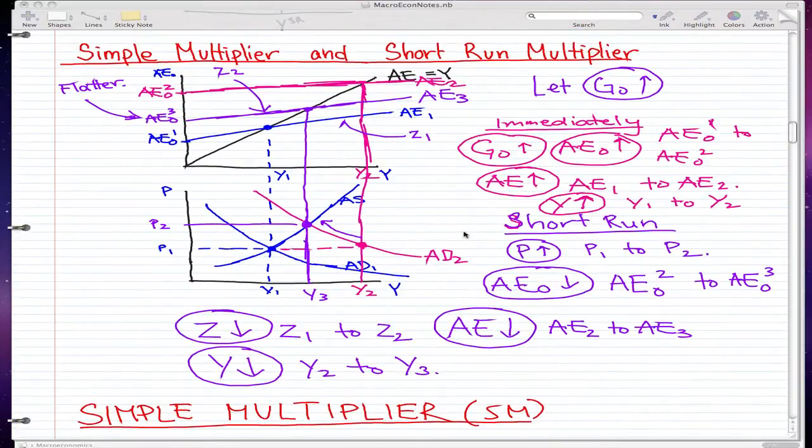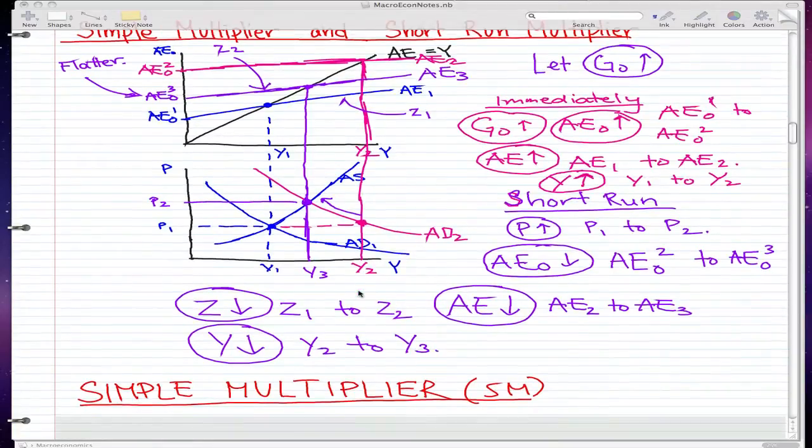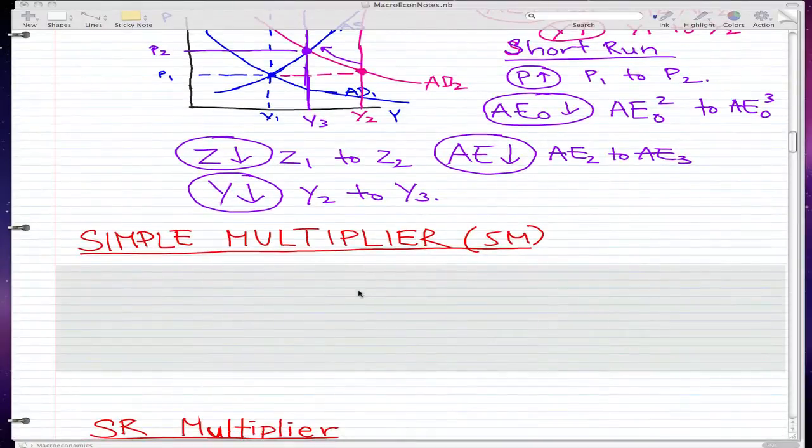So in the last video, I forgot to mention that y actually increased from y1 to y2. Well, I did mention it, but I just forgot to write it down. So we see that y1 actually increased to y2, the blue to the purple, and that is apparent. So back to this video.